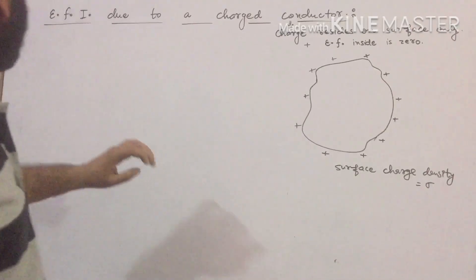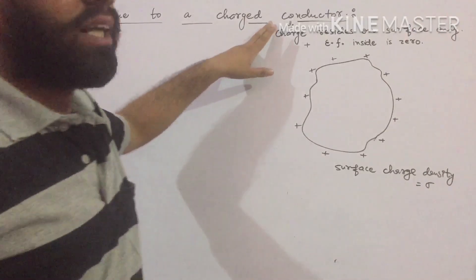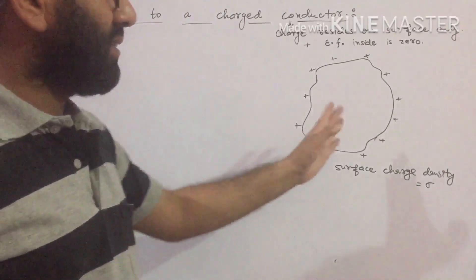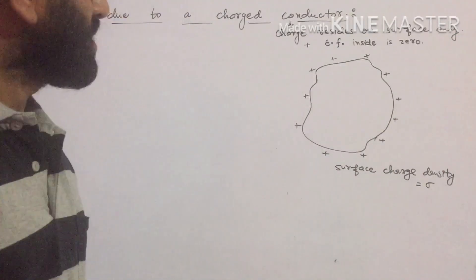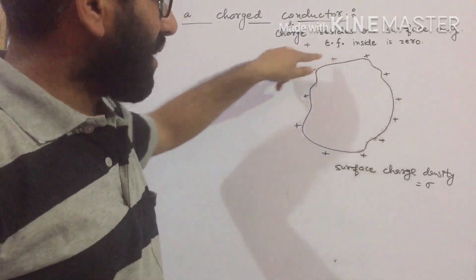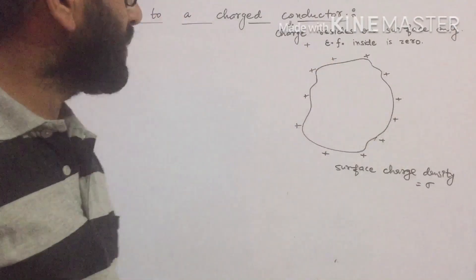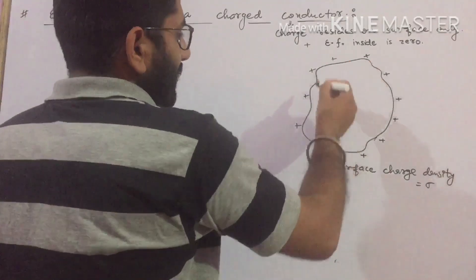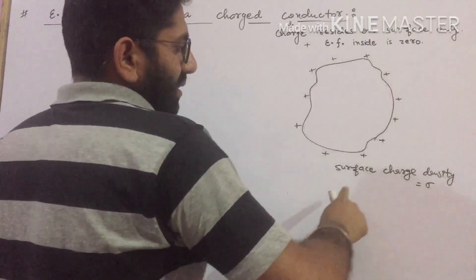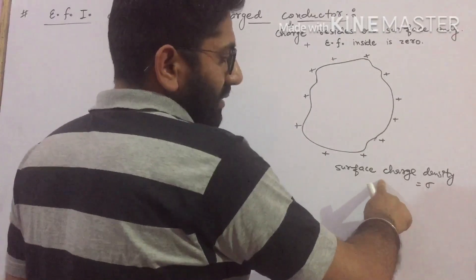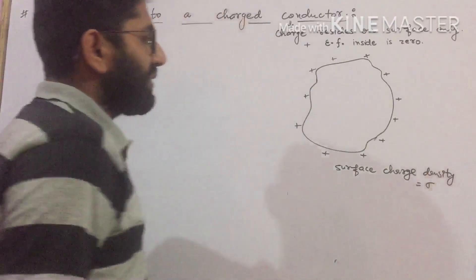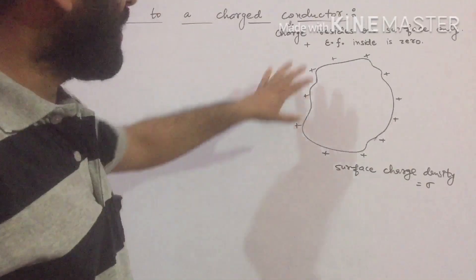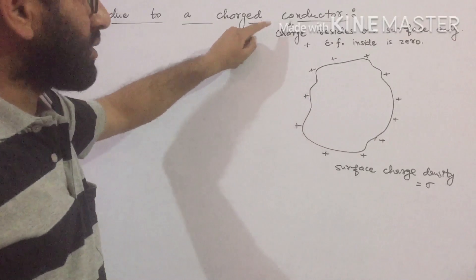The next case is a charged conductor where we have to find the electric field intensity just near it. We have a conductor of arbitrary shape and size, charged such that the charge is uniformly distributed with surface charge density sigma. Since this is a conductor, it has two important properties.